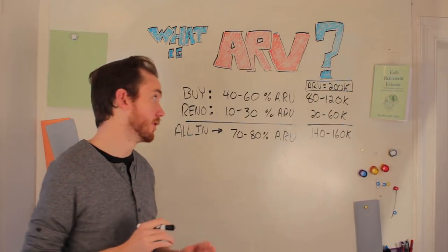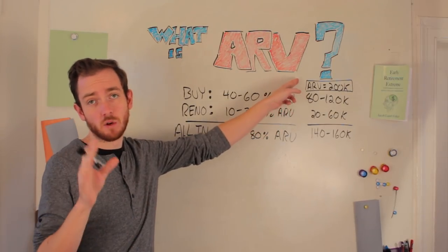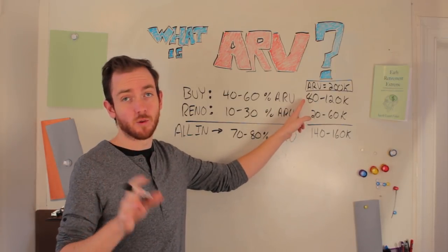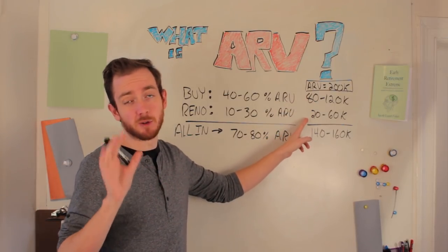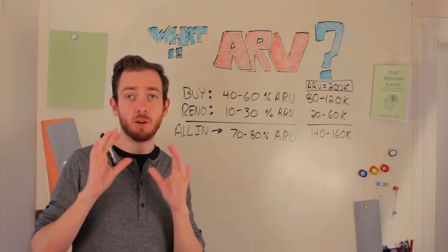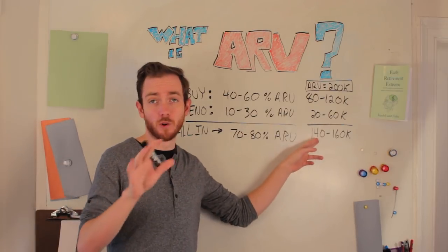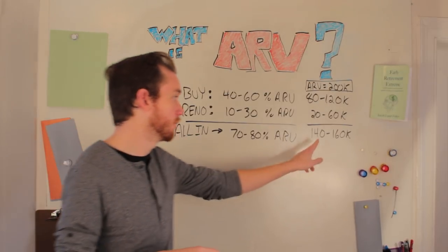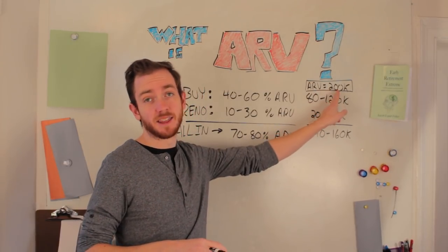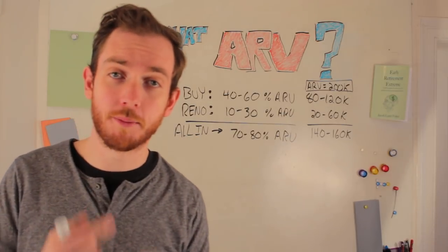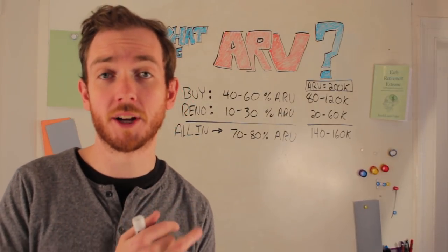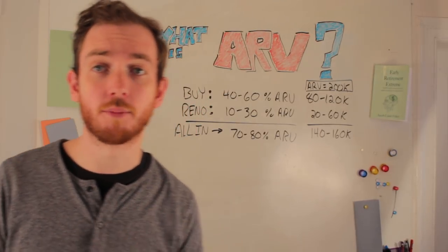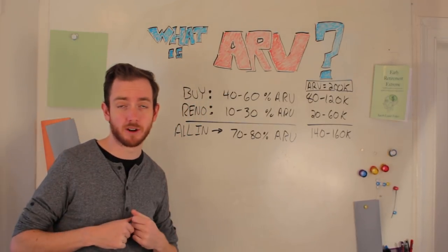Just to break out a quick example: if we're looking at an ARV of $200,000 on a property, we'd be looking to buy for $80,000 to $120,000. We'd be looking to spend about $20,000 to $60,000 on renovations, which means we'd end up about $140,000 to $160,000 all in on the property. That difference between $140,000–$160,000 and the $200,000 is our margin — our potential profit if flipping, or the equity we access if burring and refinancing.